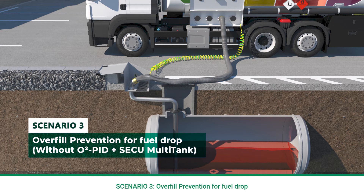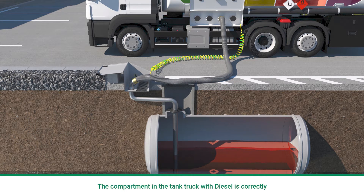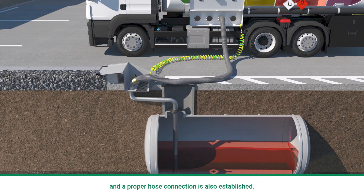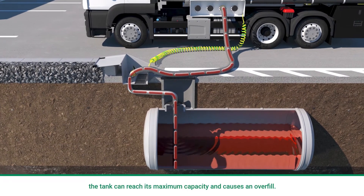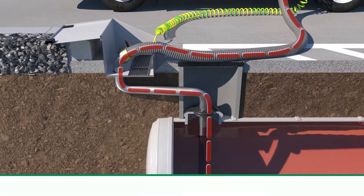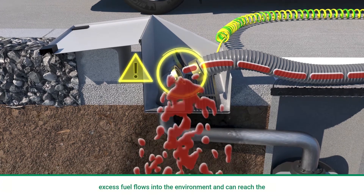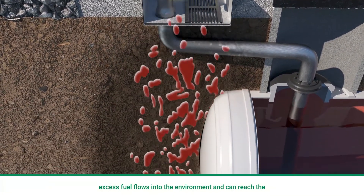Scenario 3: Overfill prevention for fuel drop without O2 Pit and Seku Multitank. The compartment in the tank truck with diesel is correctly connected to the diesel underground tank through the filling hose and a proper hose connection is established. Without the O2 Pit and Seku Multitank, when fuel is pumped into the underground tank, the tank can reach its maximum capacity and causes an overfill. The hose will also be filled with excess fuel. Once pumping is stopped and the hose is disconnected from the underground tank, the excess fuel flows into the environment and can reach the underground water.